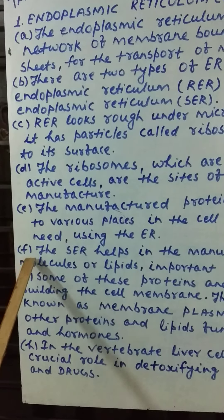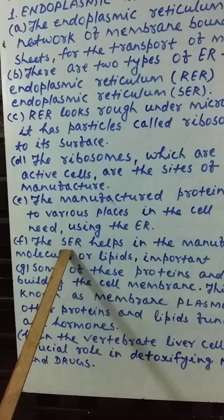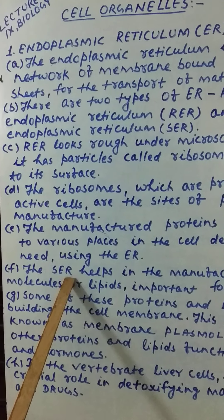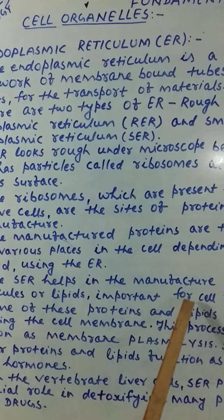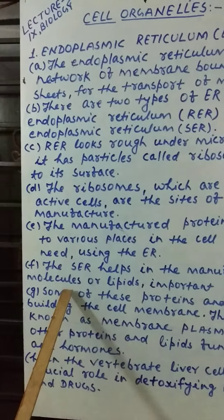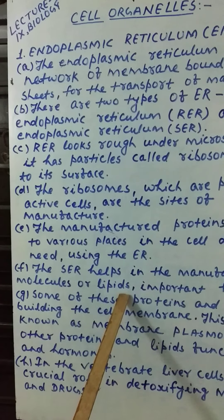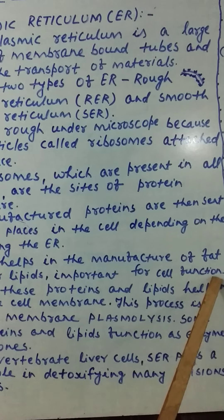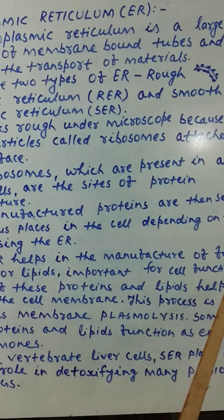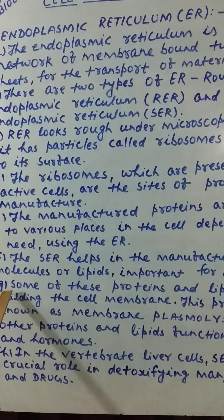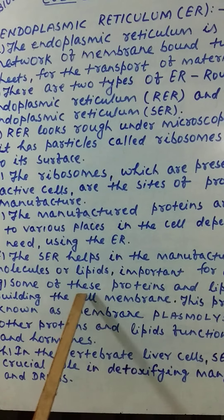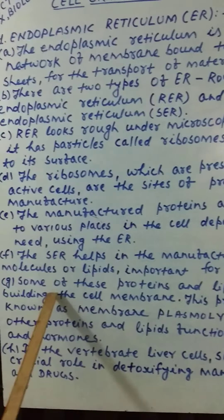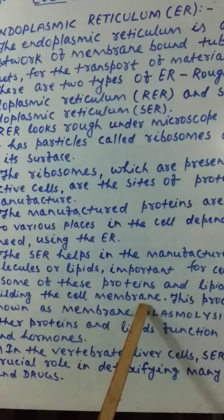The smooth endoplasmic reticulum, SER, helps in the manufacture of fat molecules or lipids. These lipids are important for cell function. Some of these proteins and lipids help in building the cell membrane.